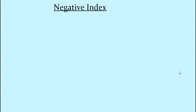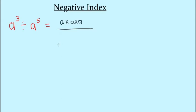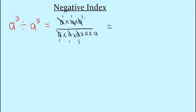The first one is the negative index. As the name suggests, it is when you have a negative in the power or the index. So we have a cubed divided by a to the fifth power. If we write this in index notation, a cubed is three a's being multiplied: a × a × a, and a to the fifth power is five a's being multiplied. Cancelling gives us one over a squared.